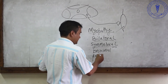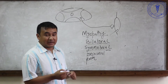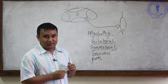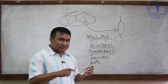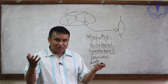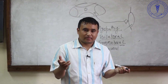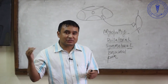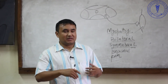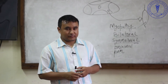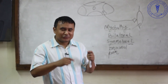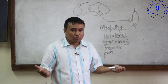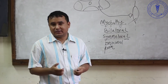Sometimes there may be pain if there is myositis or an inflammatory component. But do you think the patient will have other sensory features like numbness? Probably no, because the sensory nerves are intact here. So absence of sensory symptoms like numbness or tingling will suggest myopathy. Do you think the patient will have features of bladder and bowel incontinence? Probably no, because bladder and bowel is basically controlled by the spinal cord.